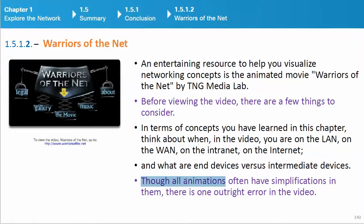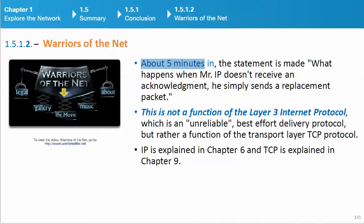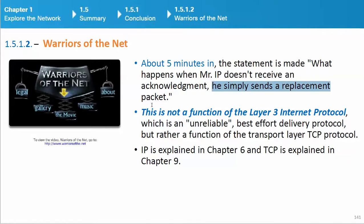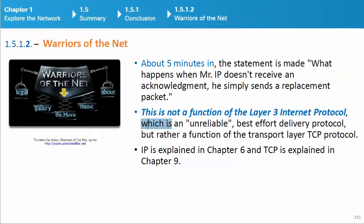Though animated movies often have simplifications, there is one outright error in the video. About 5 minutes in, the statement is made: 'What happens when Mr. IP doesn't receive an acknowledgement — he simply sends a replacement packet.' This is not a function of the layer 3 Internet Protocol, which is an unreliable, best-effort delivery protocol, but rather a function of the transport layer TCP protocol. IP is explained in Chapter 6 and TCP is explained in Chapter 9.